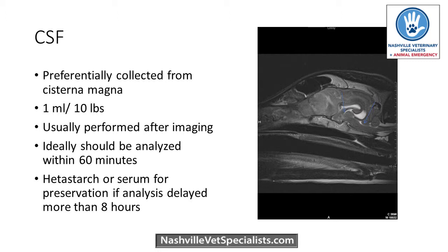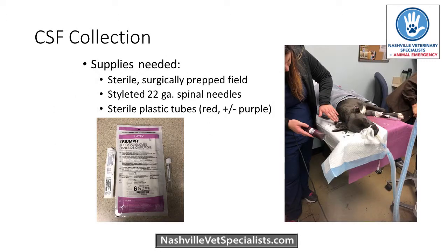If we see a definitive tumor, we don't tap because it can be risky and also doesn't give us any more information. Doing a tap doesn't require specialized equipment beyond spinal needles. For a small dog or even a cat, I'll use a 22-gauge needle with no stylet — for a dog under 10 pounds, I wouldn't use a spinal needle, just a regular 22-gauge needle.